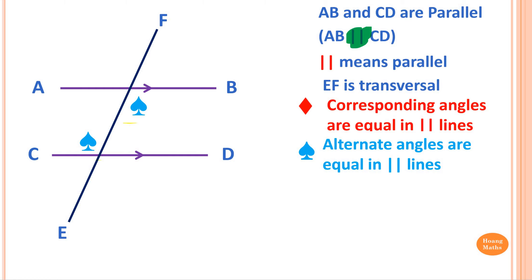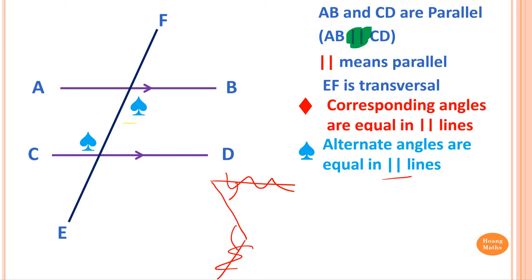They are only equal if the lines are parallel. For example, if one line goes this way, another line goes that way, and another line goes down, these two angles are also called alternate angles — but they're not equal because the lines are not parallel. So it's very important that you state parallel lines: alternate angles are equal in parallel lines.